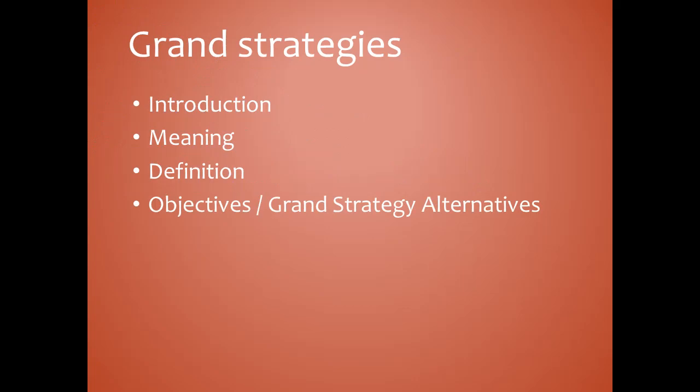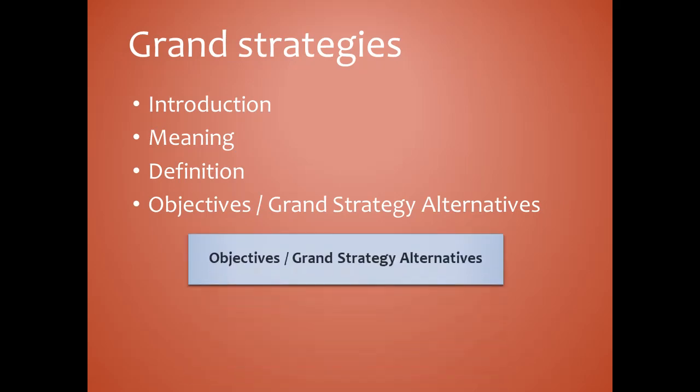The grand strategy alternatives: the first one is stability strategy. Stability implies continuing the current activities of the firm without any significant change in direction. If the environment is unstable and the firm is doing well, it may believe it is better to make no changes. A firm is said to be following a stability strategy if it is satisfied with the same market share, satisfied with improvements in functional performance, and management does not want to take any risk.